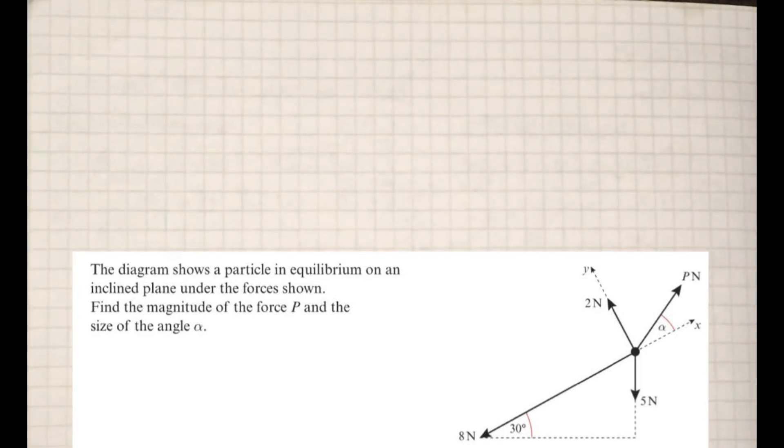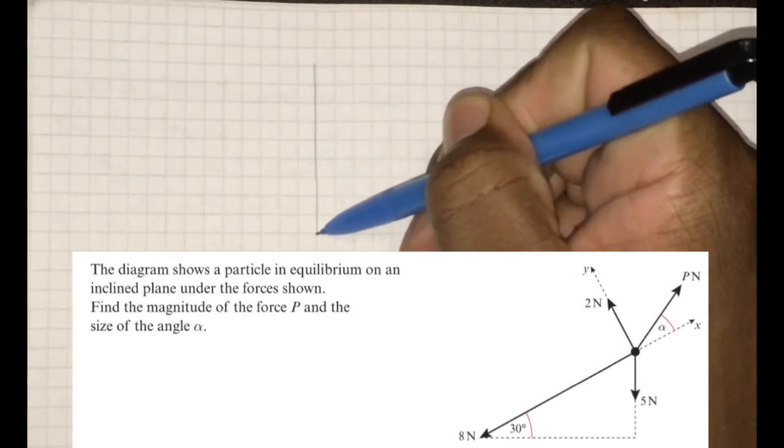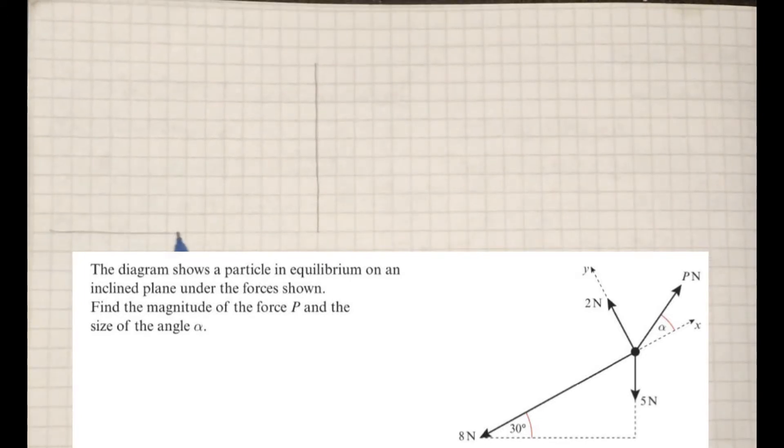So in this chapter, we're going to be looking at two states of particles, static and dynamic. Static simply means that the particle is not moving, and dynamic means that it is moving.